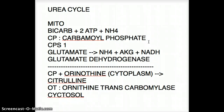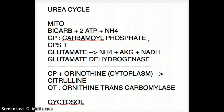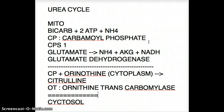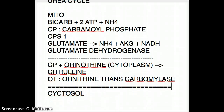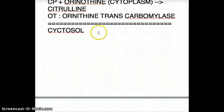The enzyme that does this entire process is ornithine transcarbamylase. Now we have citrulline, and this citrulline is going to enter the cytosol. That ends the mitochondrial section of the urea cycle.